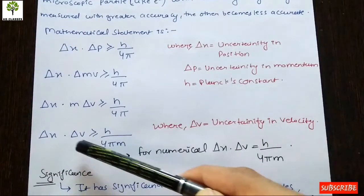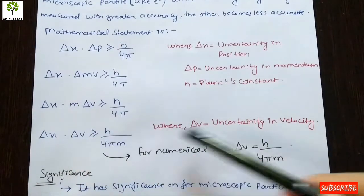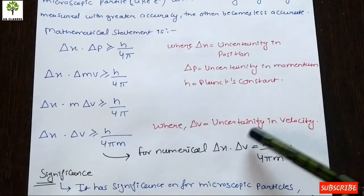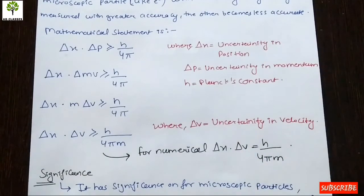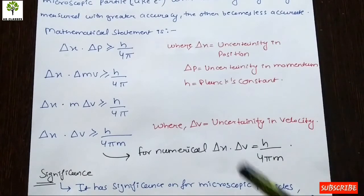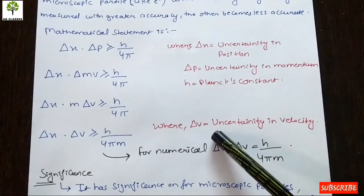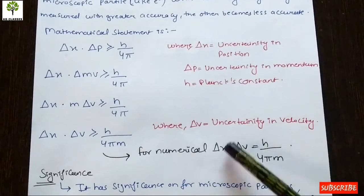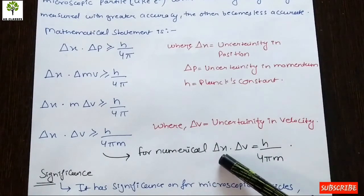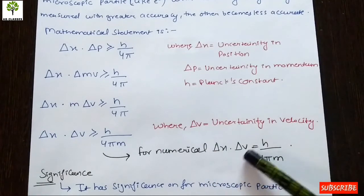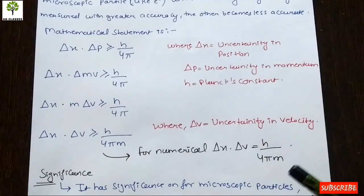Here, m is the mass and v is the velocity. If we talk about the uncertainty in velocity of the microscopic object, we use delta v. Using the numerical form, the equation is: delta x multiplied by delta v equals h upon 4 pi m.